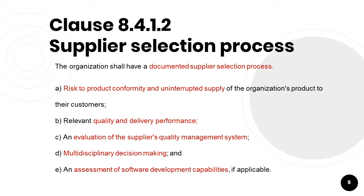Apart from this, IATF says that you should also consider the following factors while assessing a supplier: volume of automotive business, financial stability, purchased products, materials or service complexity, required technology, adequacy of available resources, design and development capability of the supplier, manufacturing capability of the supplier, change management process, business continuity planning, and logistic process and customer service.